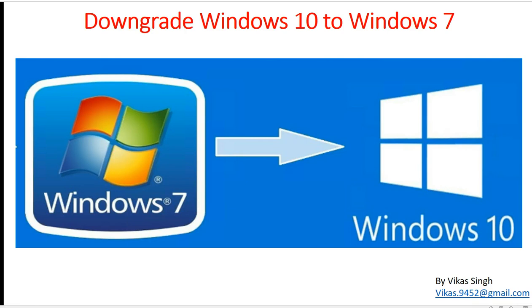Hi friends, welcome to my channel. Today in this video I'm going to show you how to downgrade Windows 10 operating system to Windows 7. There are some complex situations when you upgrade your machine from Windows 7 to Windows 10 and after the upgrade you find that your applications are not working as expected.